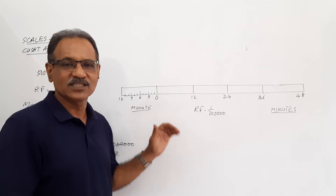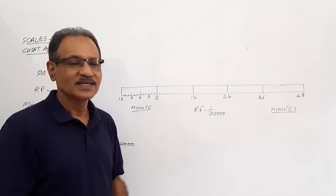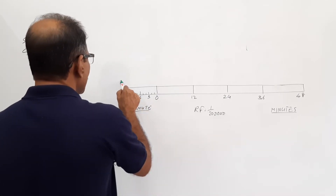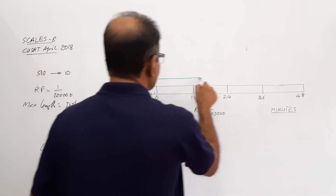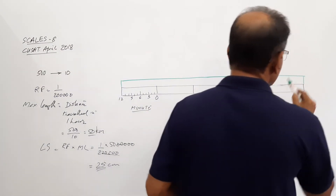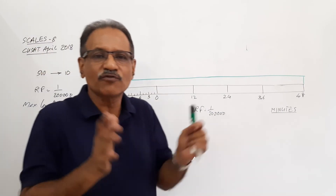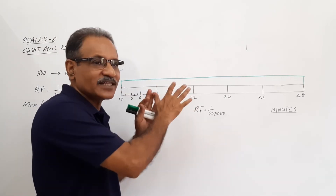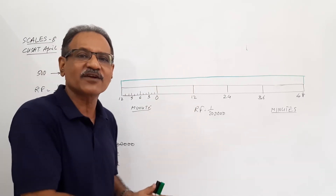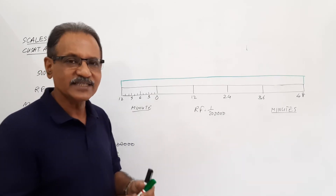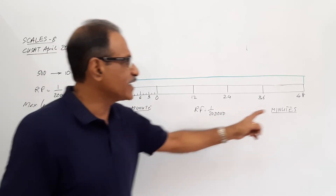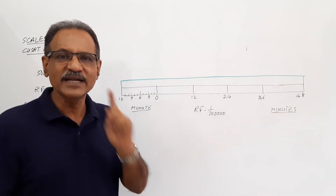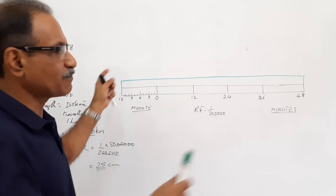Now actually this is the question — this is the way it is drawn in many textbooks. But I have a different opinion. I believe that on top of this, you have to draw one more scale. When two scales of the same RF are drawn together, you call it a comparative scale. So I draw another scale on top of this with the same RF, representing distance — 50 kilometers.